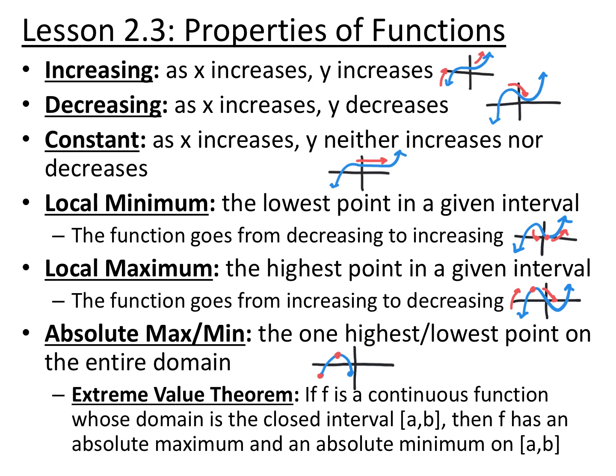Absolute maximum or minimum are the one highest or the one lowest point on the entire domain. That could also be a relative max or min, or it could be an endpoint where the graph stops. It's the one point everyone can point to as the single highest or lowest. There could also be none.